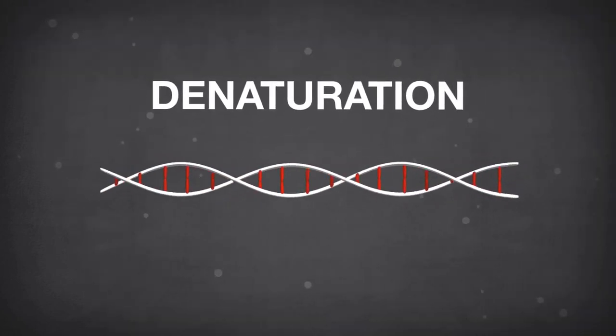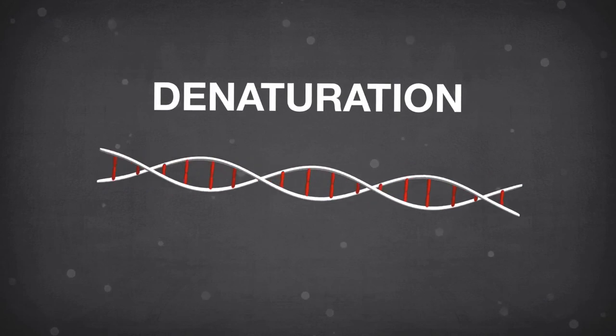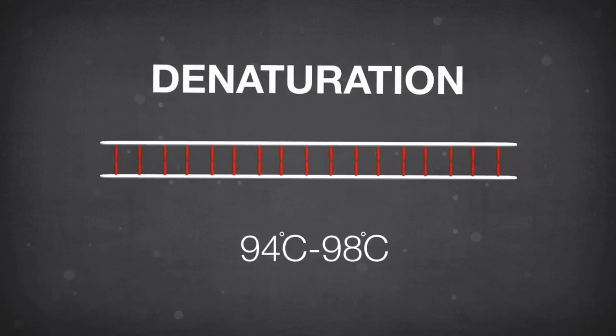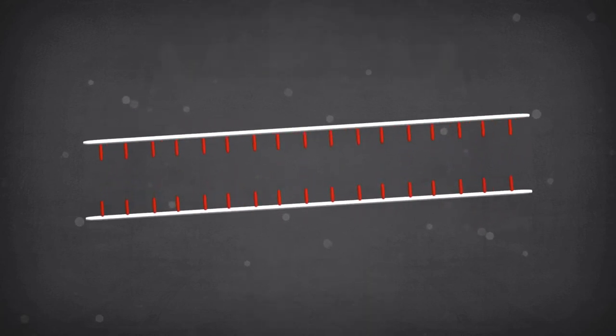Denaturation is the first step in the PCR reaction. The sample is heated at a high temperature between 94 and 98 degrees Celsius to separate the double-stranded DNA into single strands.